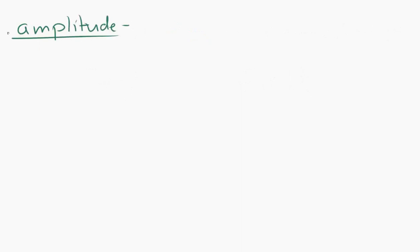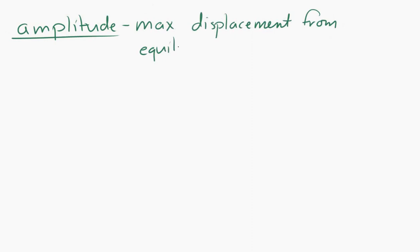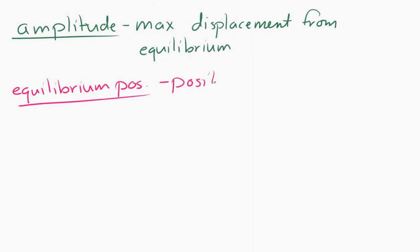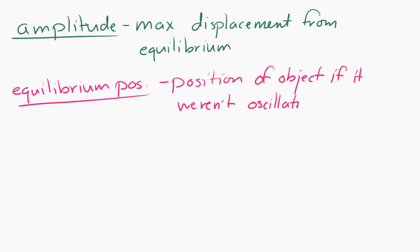The amplitude is the maximum displacement from equilibrium during an oscillation. The equilibrium position is the position of the object if it were not oscillating. So the amplitude is the maximum displacement from that equilibrium position. The symbol often used for amplitude is x₀, though you may also see a capital A.